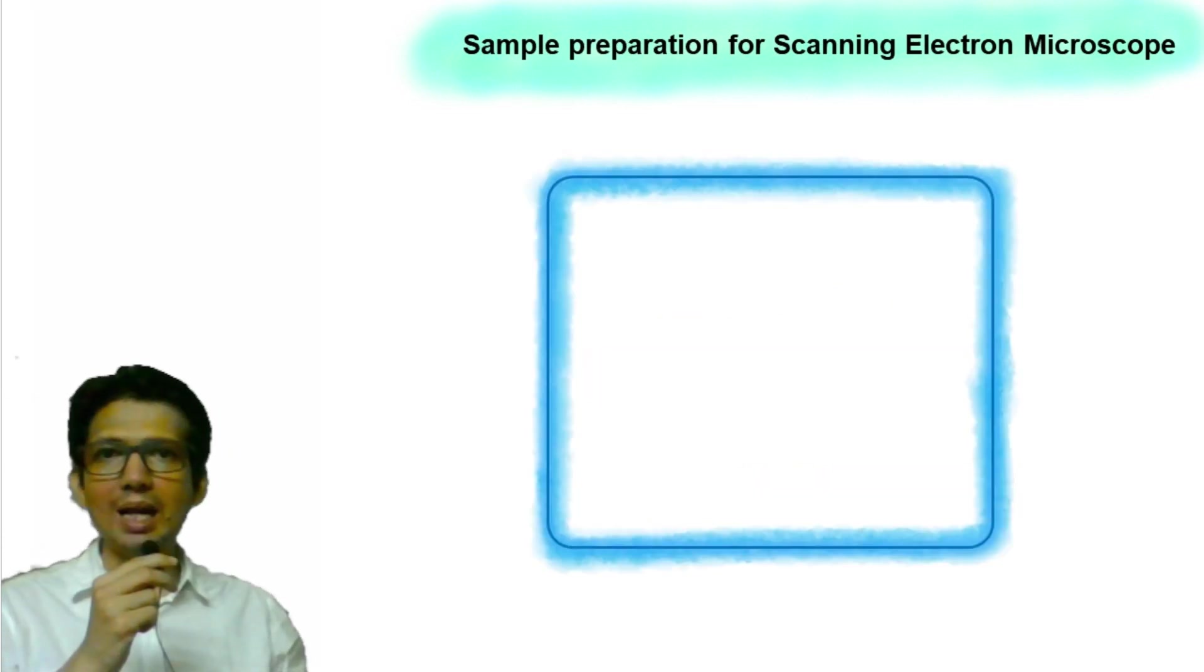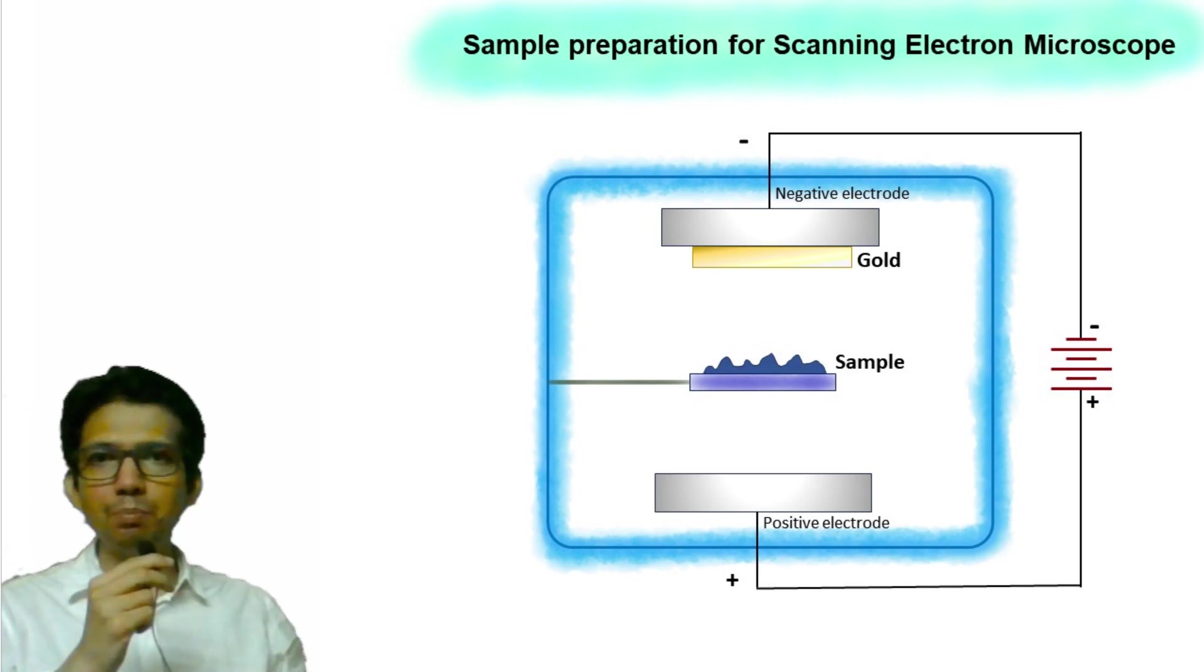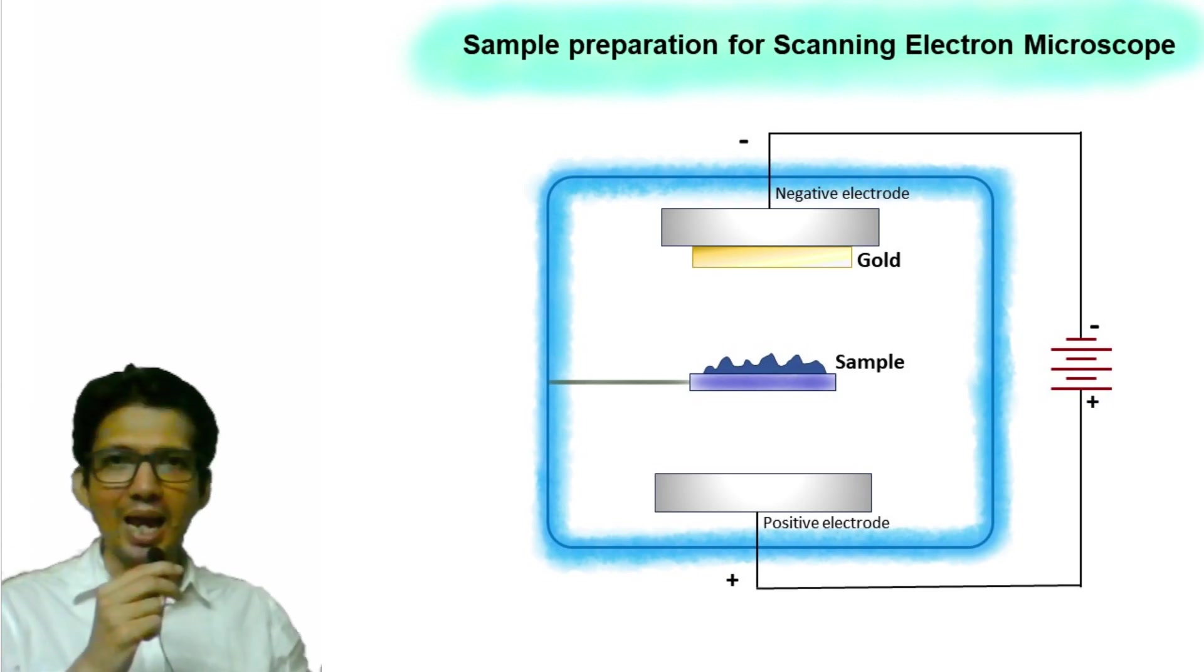For this process, the sample is placed in a chamber which has two electrodes. The negatively charged electrode is attached with metal such as gold or platinum. Once the sample is placed in the chamber, the air is removed to generate a vacuum.